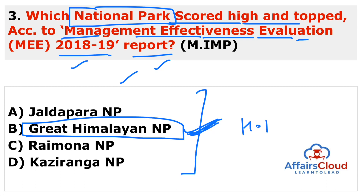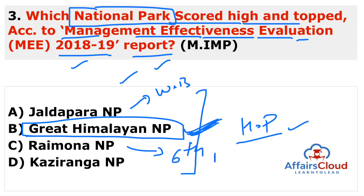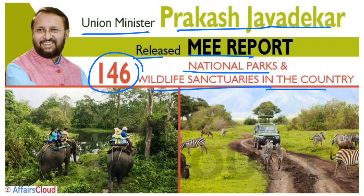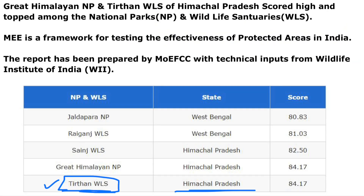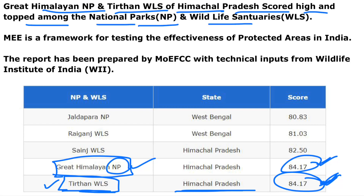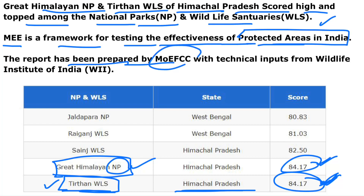Great Himalayan National Park is located in Himachal Pradesh. Jalpaiguri is in West Bengal. Remember Raimona National Park — it is the sixth national park of Assam. In the wildlife sanctuary category, the top scorer is Tirthan Wildlife Sanctuary, also in Himachal Pradesh. So Great Himalayan National Park topped in the national park category and Tirthan Wildlife Sanctuary topped in the wildlife sanctuary category, both from Himachal Pradesh.